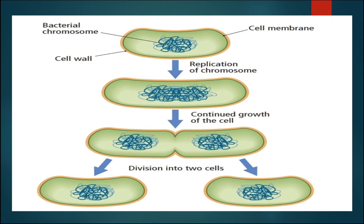Bacteria show different types of reproduction, the most common being fission. In fission, the parental bacterial cell grows in size, then divides to form two daughter bacterial cells. The bacterial chromosome in the nucleoid region undergoes replication — DNA doubles in number — then the cell undergoes growth, the nucleoid divides into two, and finally the cell divides into two. From one parental cell, two daughter cells are formed. This phenomenon is known as binary fission.